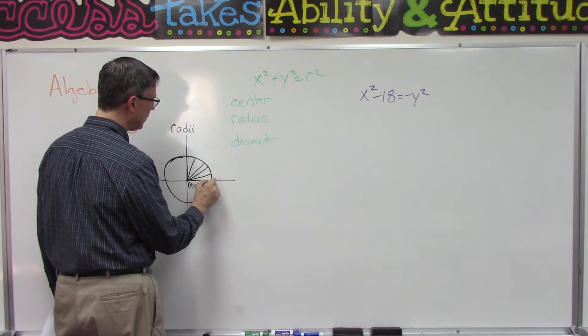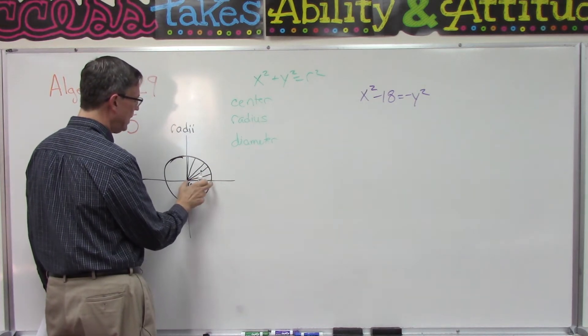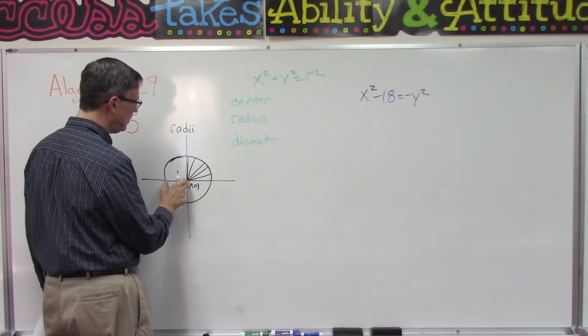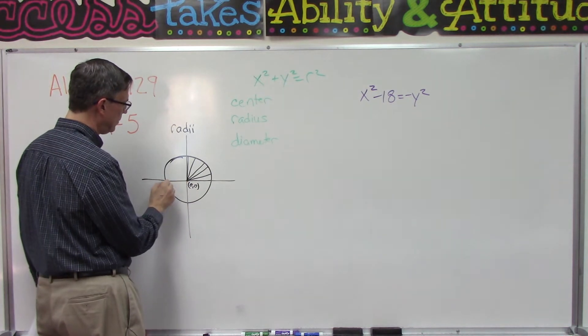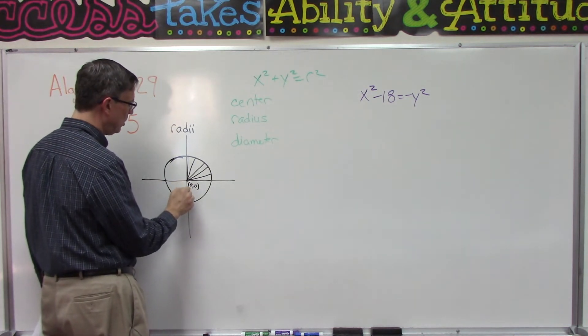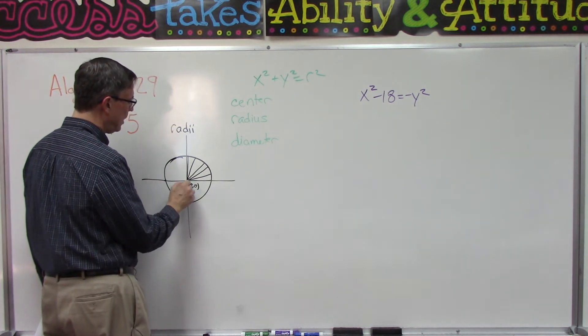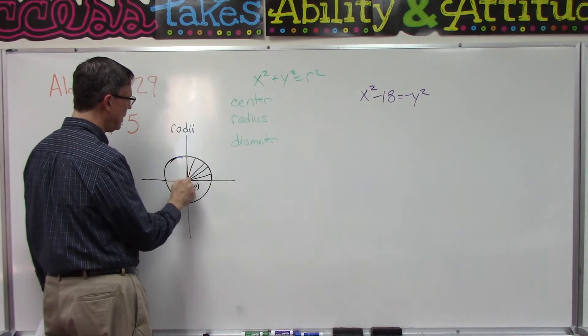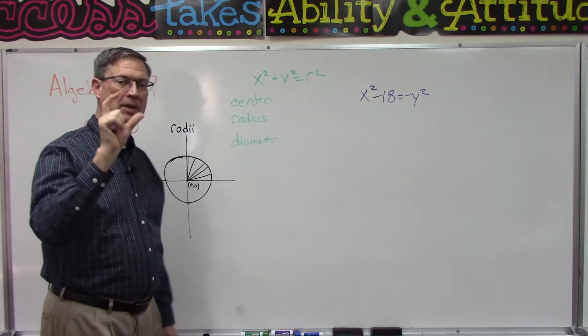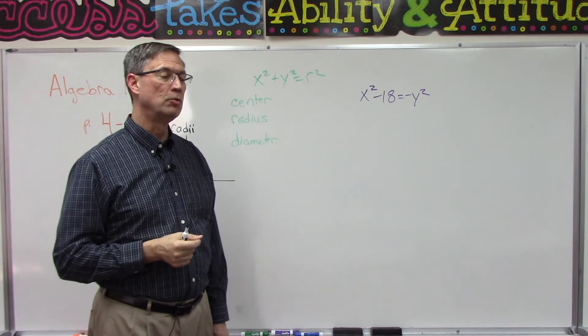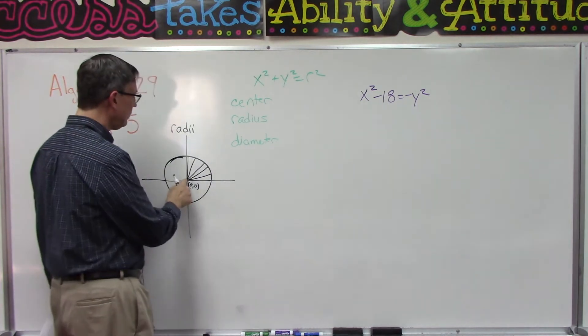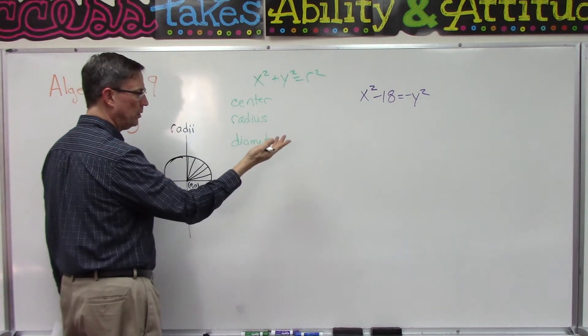The radius from the center to here will be the same as from the center out to this side, and from here down to here, and from the center up to the top. At any point along here, that length, that distance will be the same.